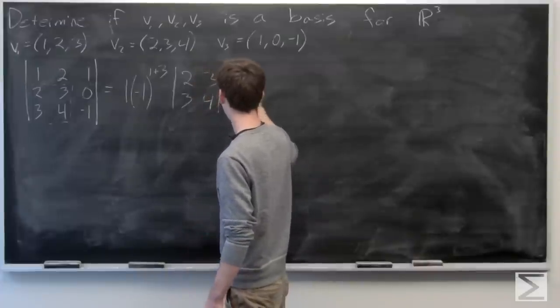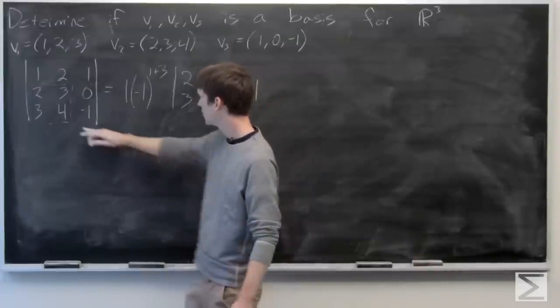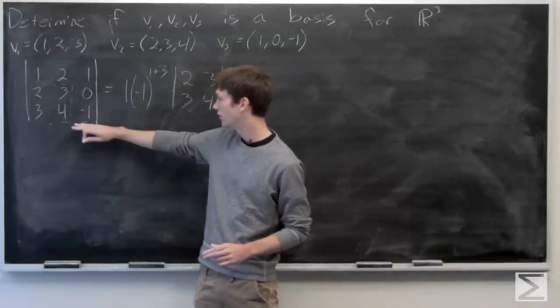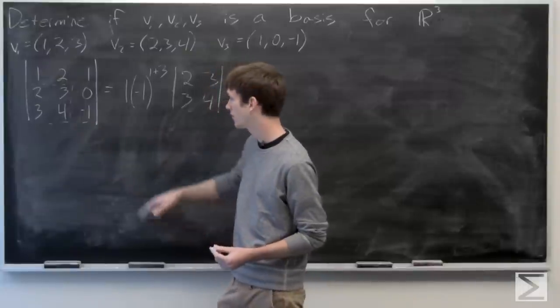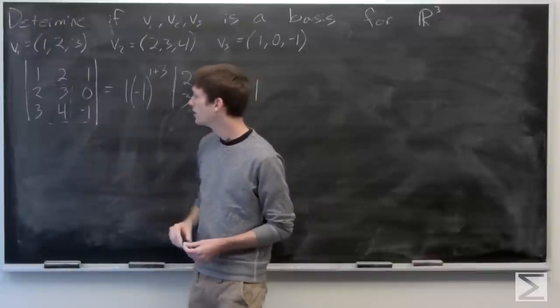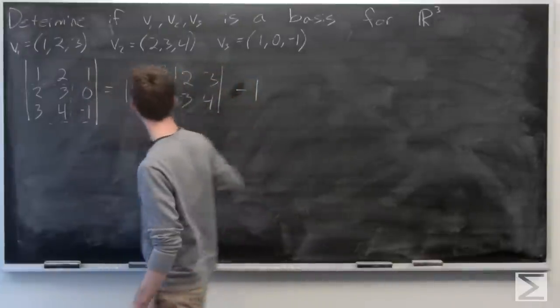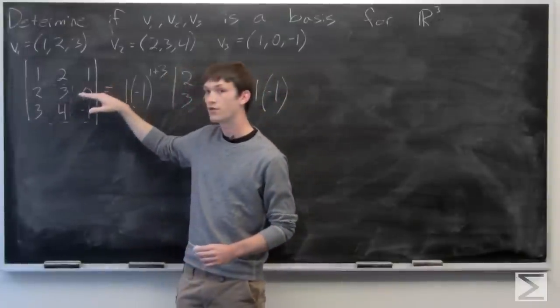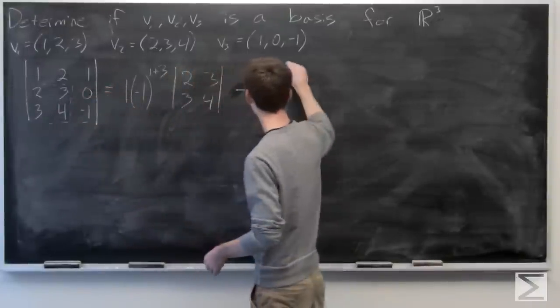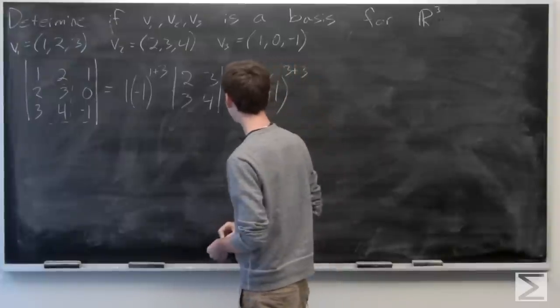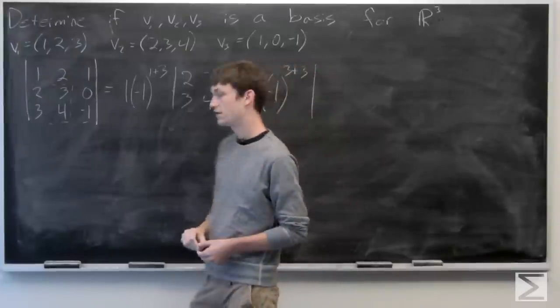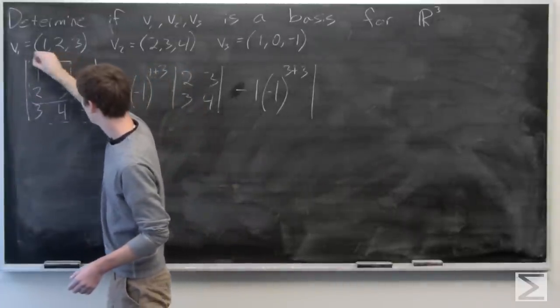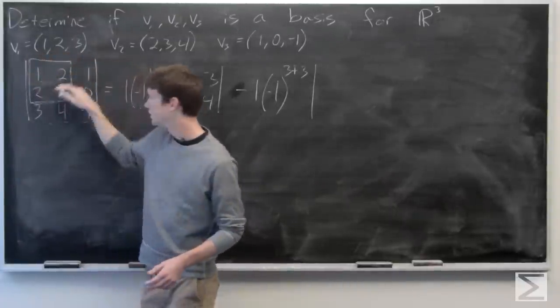And then plus minus 1 for this part, for our third part of our expansion. We have negative 1 and then multiply that by negative 1 to the power of, we're in our third column and our third row, so 3 plus 3. And then the determinant of 1, 2, 2, 3.